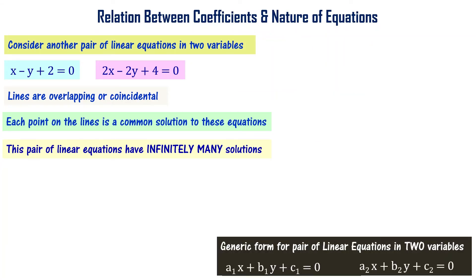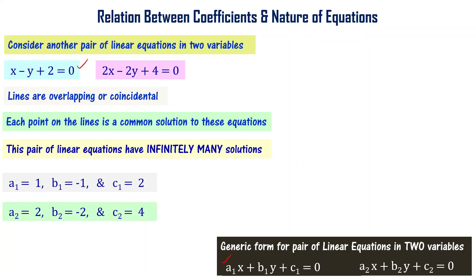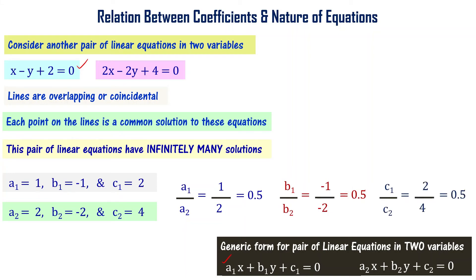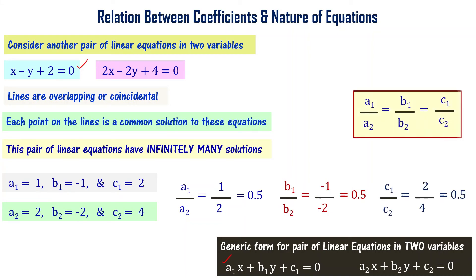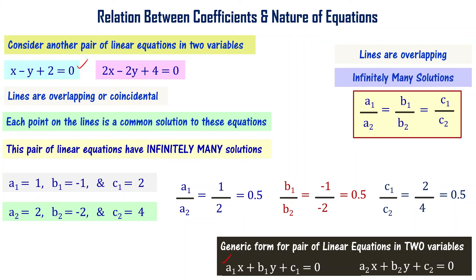Checking the coefficient ratios: comparing the first equation, a1 = 1, b1 = -1, c1 = 2. From the second equation: a2 = 2, b2 = -2, c2 = 4. Computing: a1/a2 = 0.5, b1/b2 = 0.5, and c1/c2 = 0.5. So a1/a2 = b1/b2 = c1/c2. When this relation holds, the lines are overlapping and there are infinitely many solutions — a consistent and dependent set of linear equations.